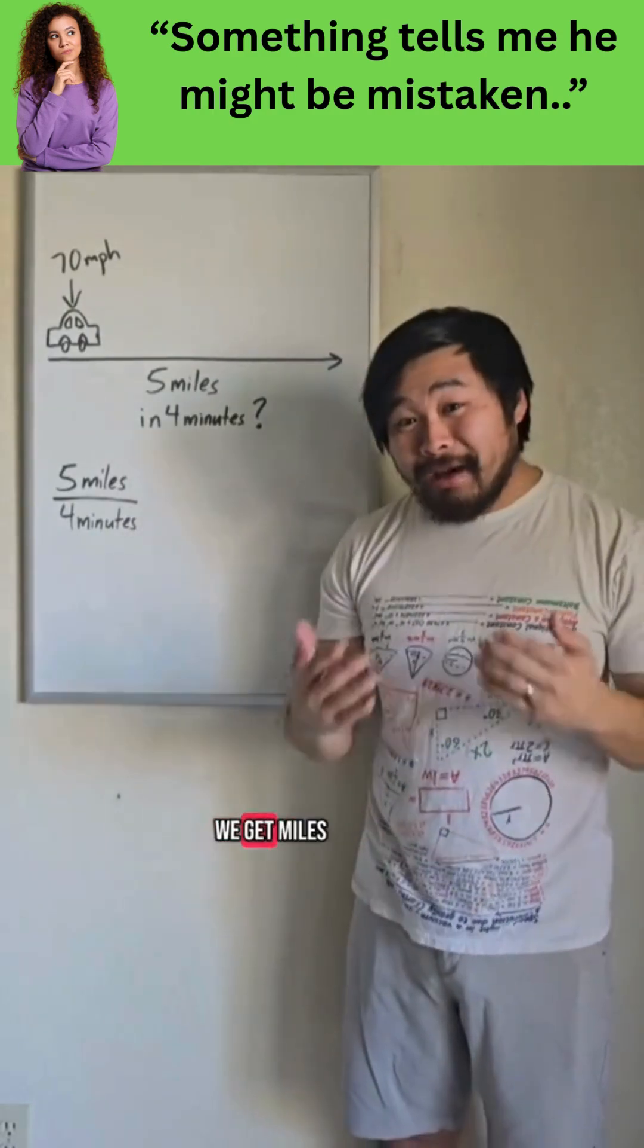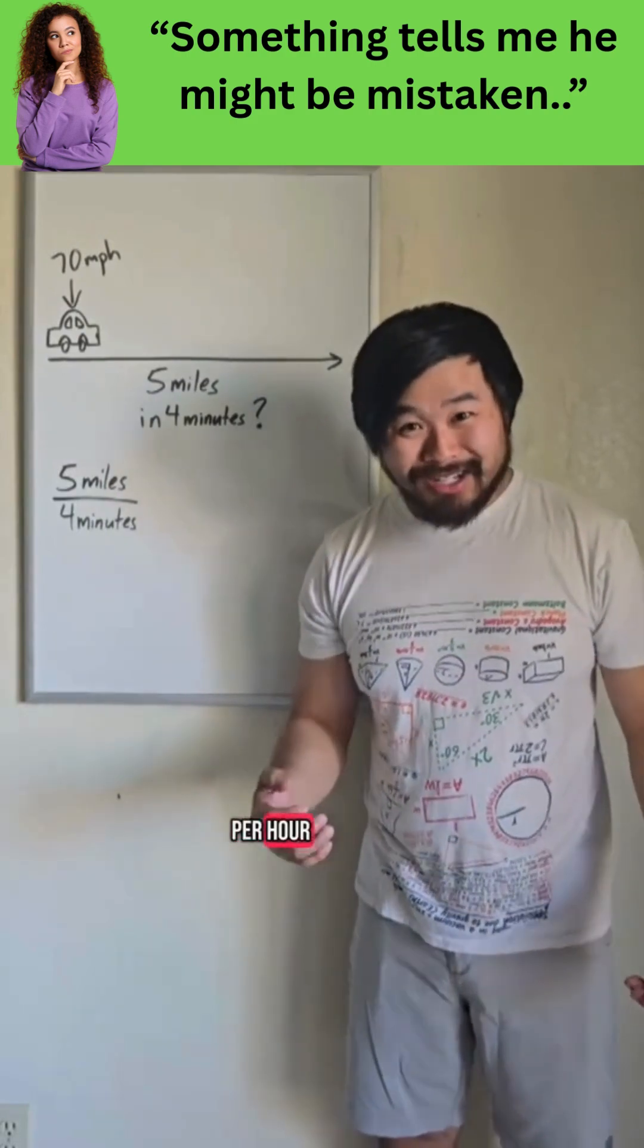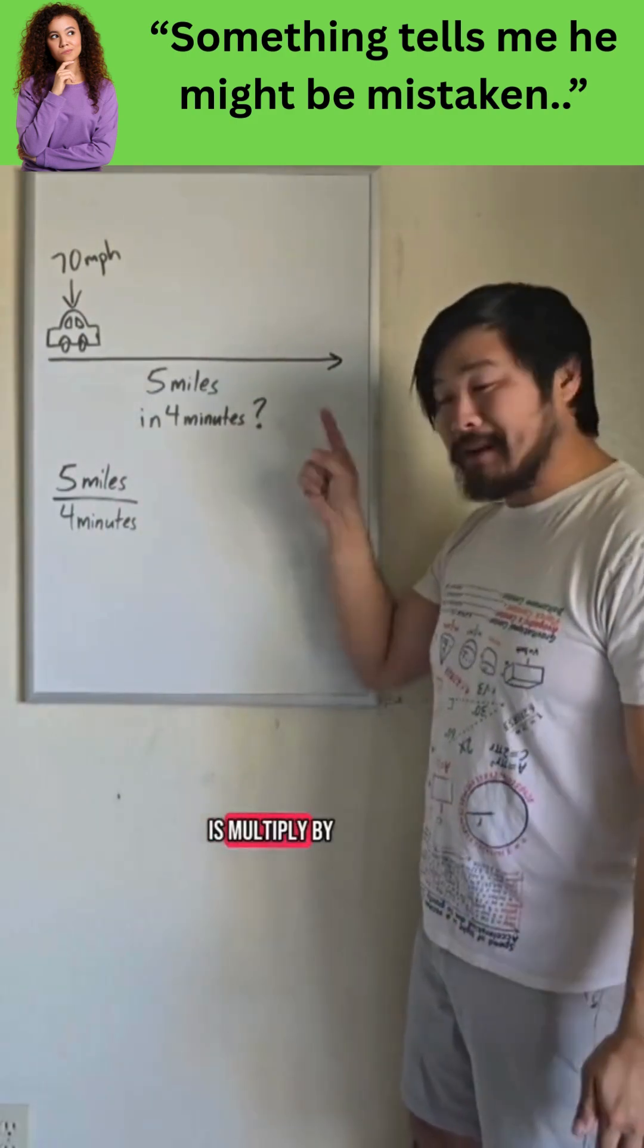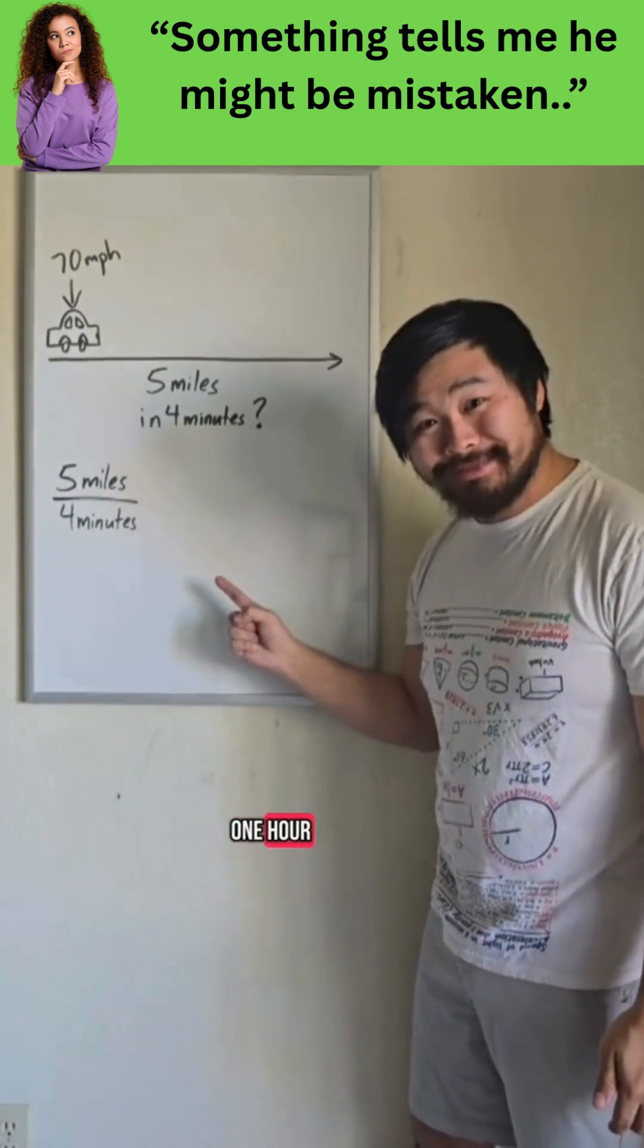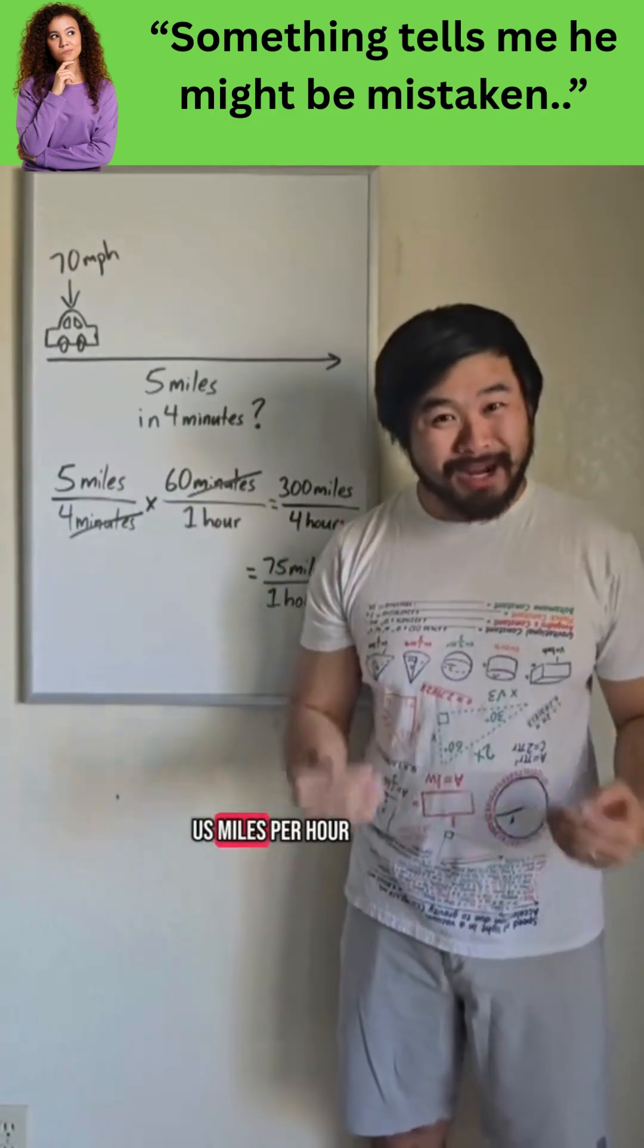Now if we divide we get miles per minute. I don't want miles per minute. I want miles per hour. So all I have to do is multiply it by 60 minutes over one hour. And this is because this is a strategic one that will get us miles per hour.